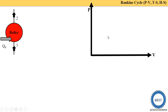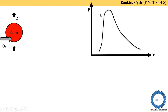In the PV diagram, P means pressure and V means volume. There is one curve called the saturation curve, and on this saturation curve there is a point called the critical point. From the critical point, the left side is called the saturated liquid line and the liquid region; the right side is called the saturated vapor line and the vapor region.